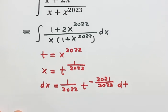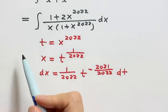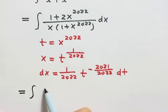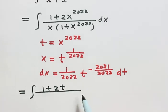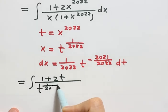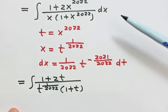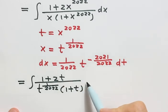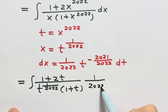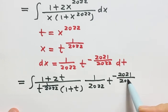Now we can do the substitution — use t to replace all the x in the expression. On top we have 1 plus 2t. On the bottom, x is t to the power 1 over 2022, then times 1 plus 2t, then times 1 plus t. For dx, we substitute 1 over 2022 times t to the power 1 over 2022 dt.